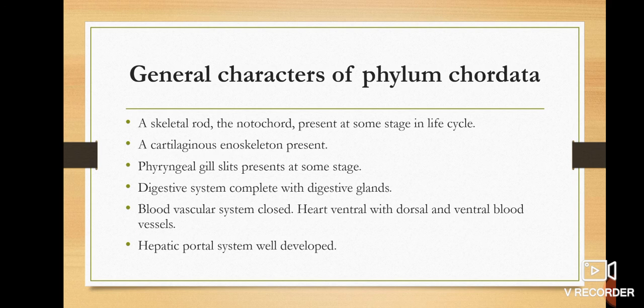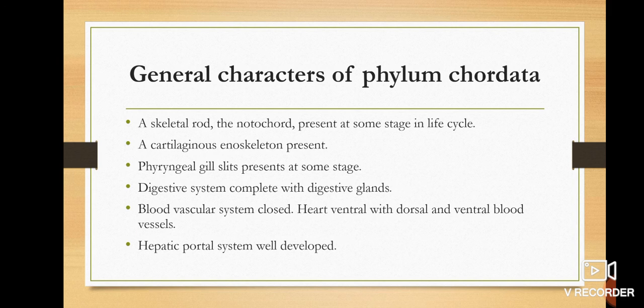The digestive system is complete — from mouth to anus — and is associated with digestive glands. Now, the circulatory system: the blood vascular system is of closed type because blood flows within vessels. The heart is mostly present on the ventral side, and dorsal and ventral blood vessels are also present. The hepatic portal system, which is related to the liver, is well developed.